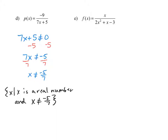In example e, f of x equals x in the numerator divided by 2x squared plus x minus 3 in the denominator. The domain is all real numbers except any x that makes the denominator zero. Setting 2x squared plus x minus 3 cannot equal zero, this is a quadratic trinomial that can be solved by factoring. The factors are 2x plus 3 and x minus 1.